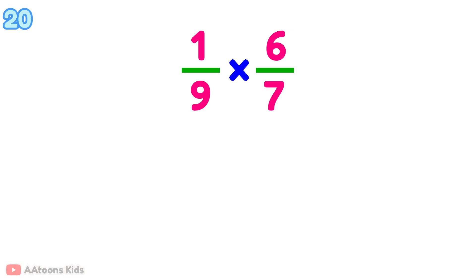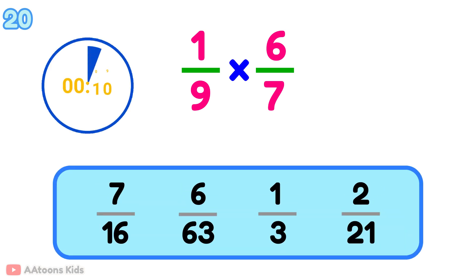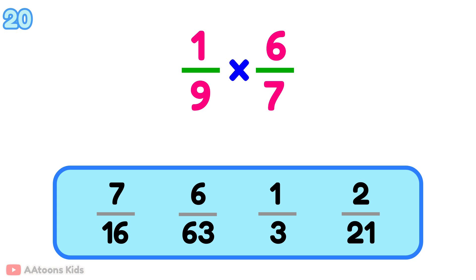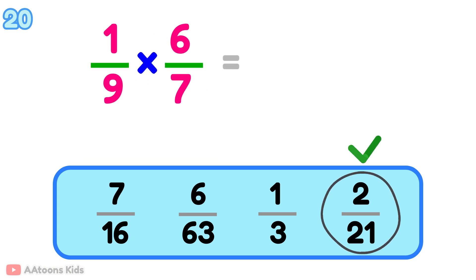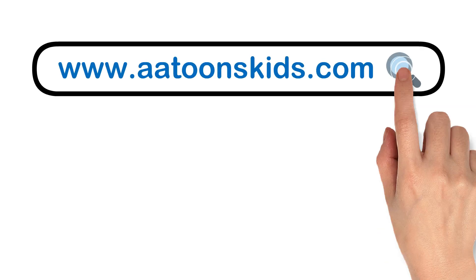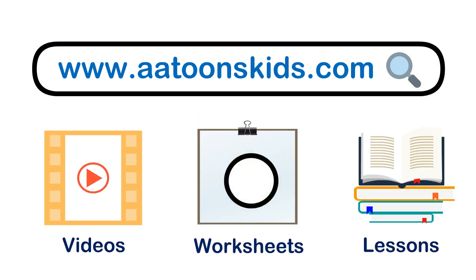What is 1 over 9 multiplied by 6 over 7? 2 over 21.